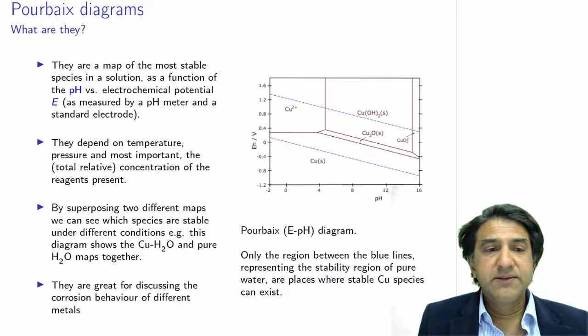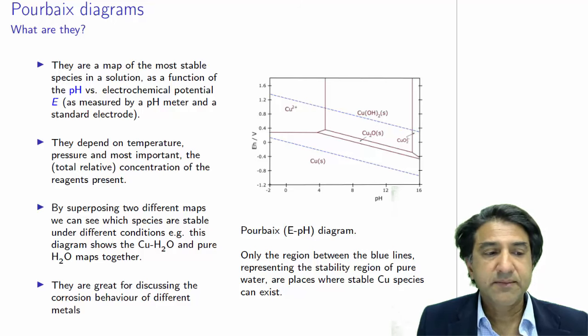Another thing we can do is we can superpose two different maps. One, in this case, for copper and another one for, say, iron. And looking at the overlapping regions, we can tell which species will react with each other. That's really cool. Generally speaking, they're most often used, these Pourbaix diagrams, to discuss corrosion behavior of different metals and alloys.